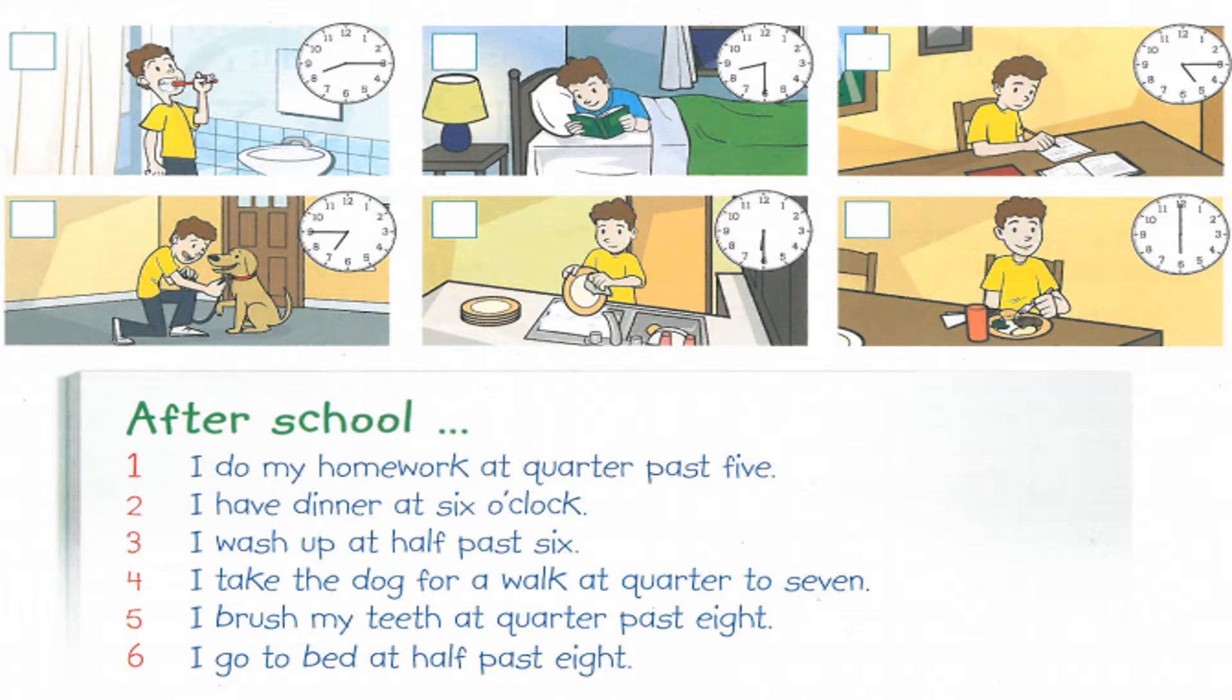The first sentence is, I do my homework at quarter past 5. So, which one is quarter past 5? We need to see small hand at 5. This is at 8. This is at 5. Oh, and quarter has passed. It means this area has passed. It means quarter past 5. I do my homework at quarter past 5. So, James does his homework at quarter past 5. We are going to give this picture number 1.